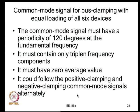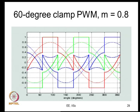If you add the positive common mode signal, one phase is clamped to the positive bus - whichever has the maximum of the three sinusoidal modulating signals. If you add the negative common mode, the most negative phase gets clamped to the negative bus. This is followed for 60 degrees alternately. The triplen frequency common mode component has 120-degree periodicity and no DC component. This 60-degree clamp is also called DPWM1.